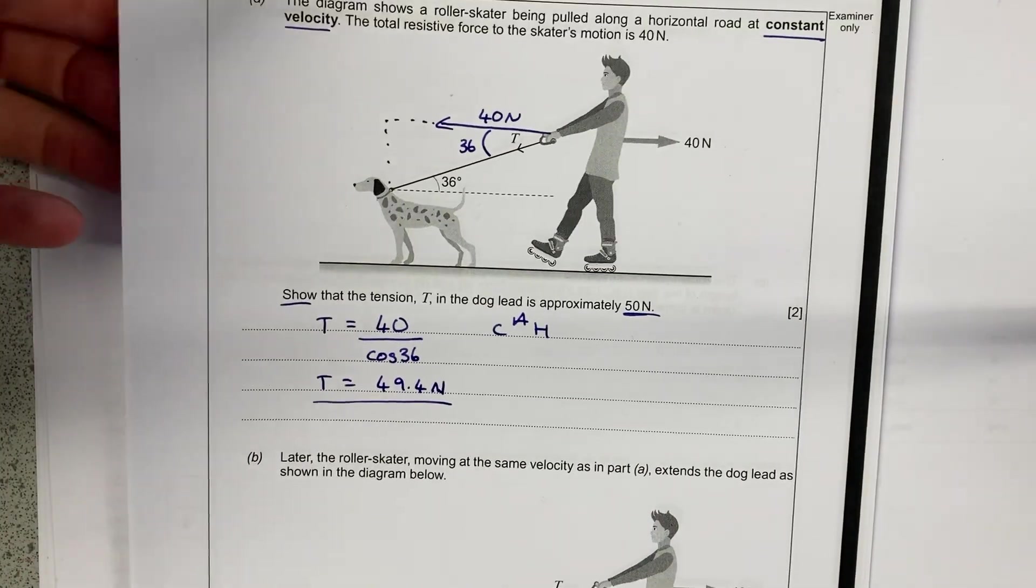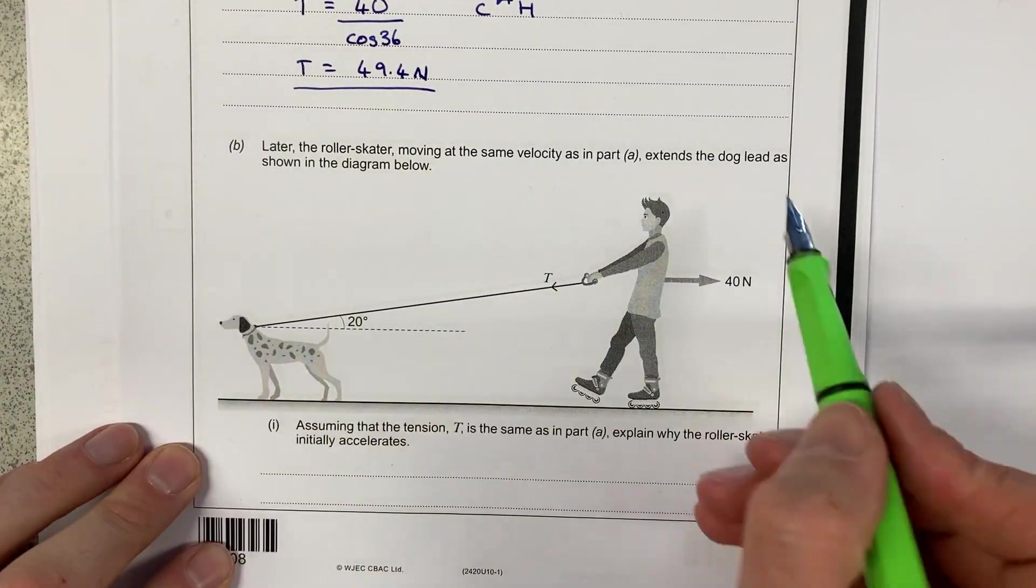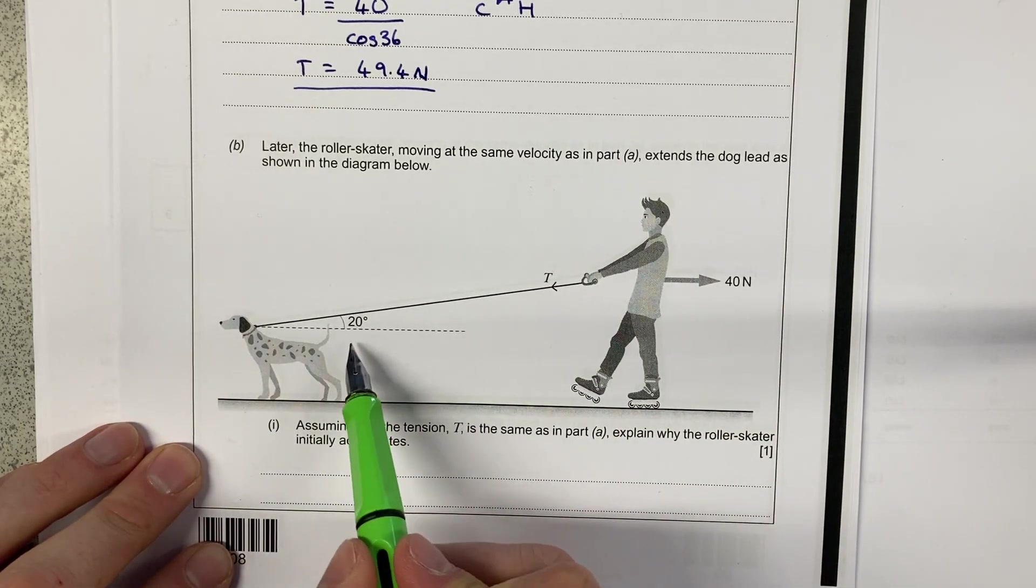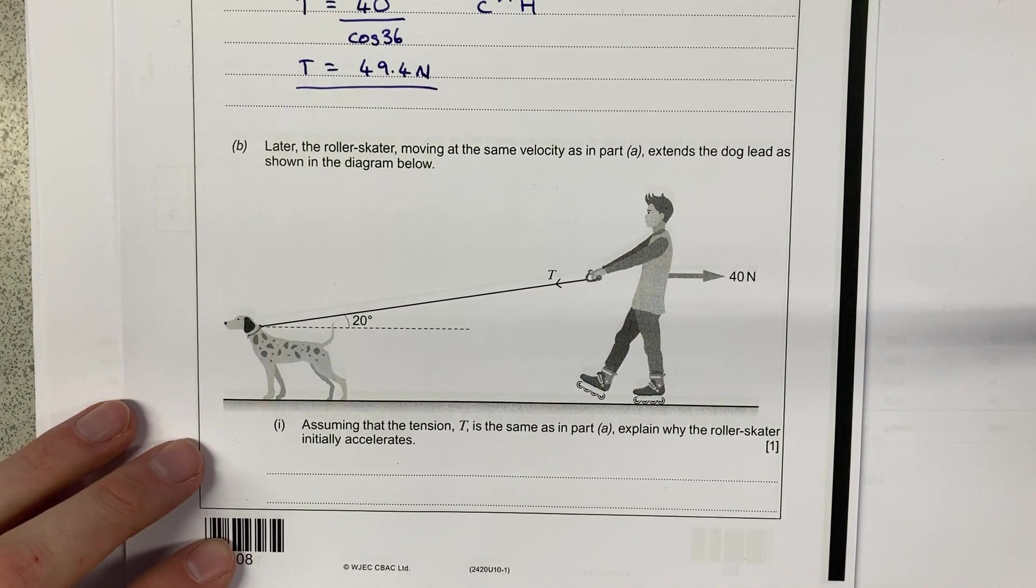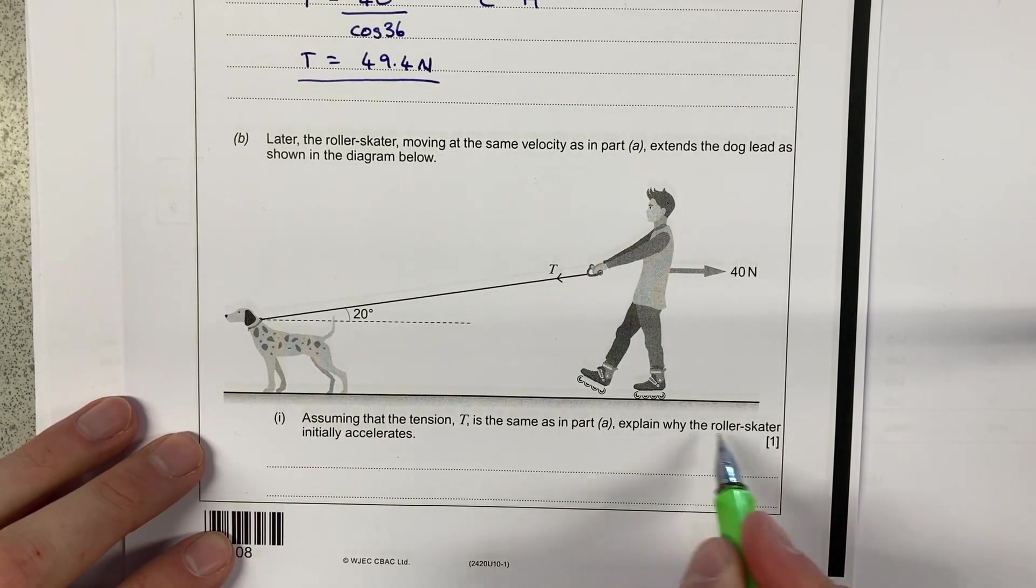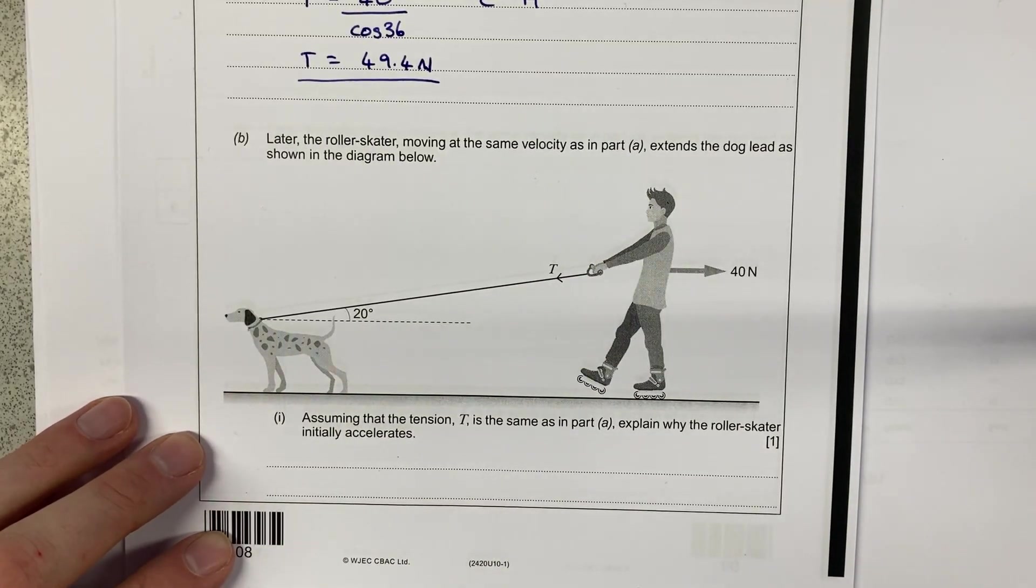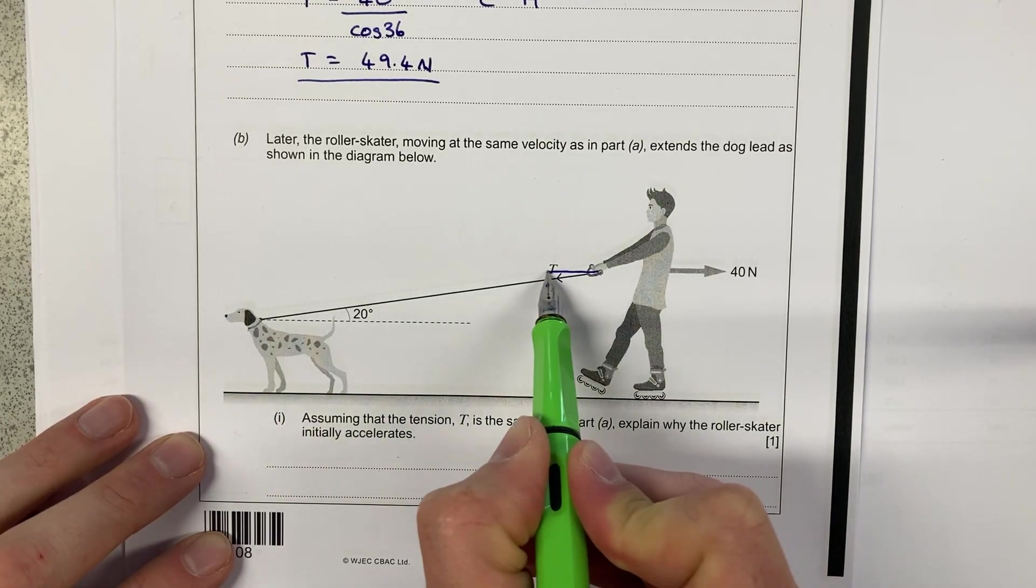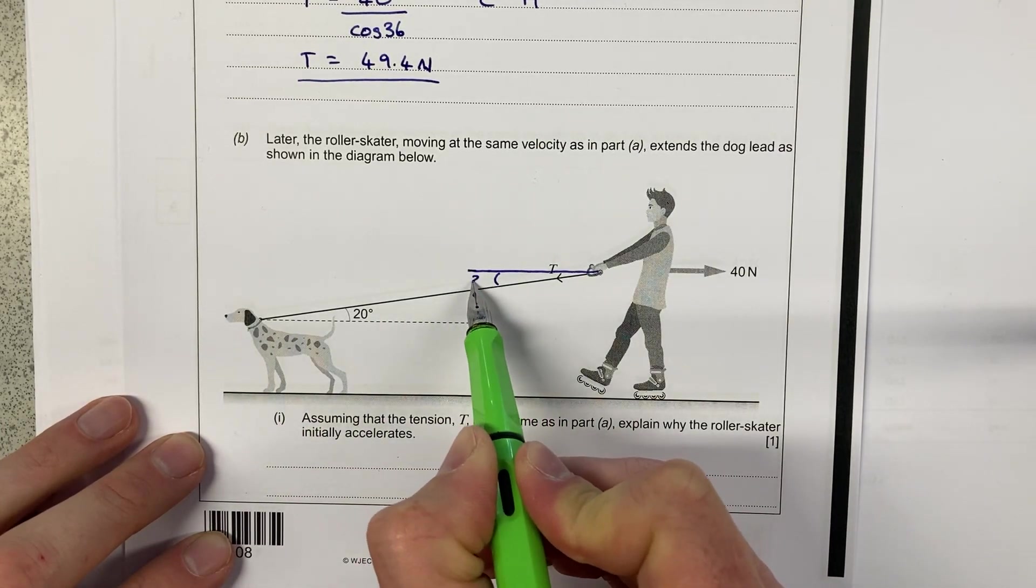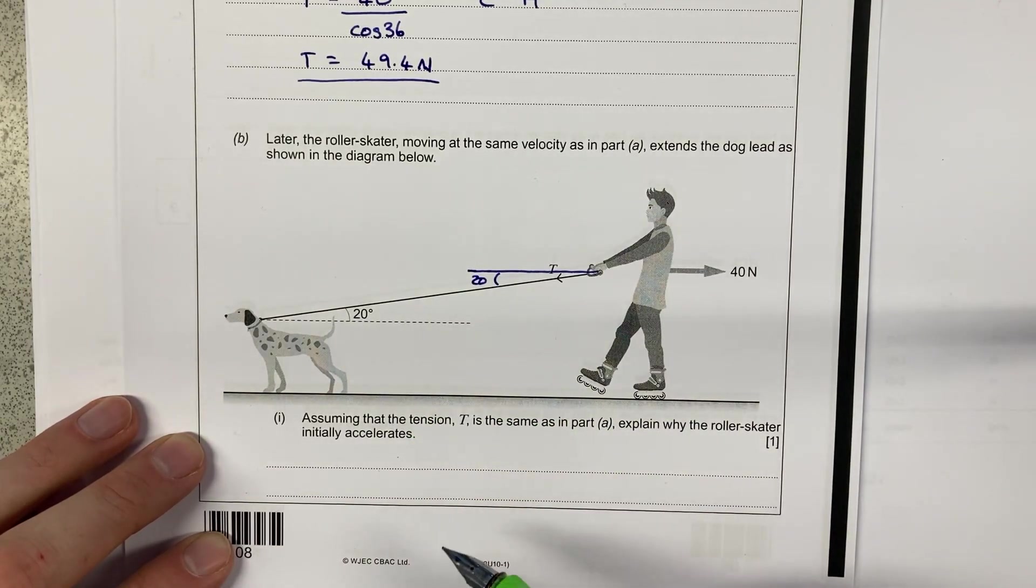So for the second part of the question, the situation has changed now, so that this angle here is 20. So without really having to do any extra calculations, we can go about explaining why the roller skater initially accelerates. So what's going to happen is, as this angle here, it's also 20, as this angle gets smaller,